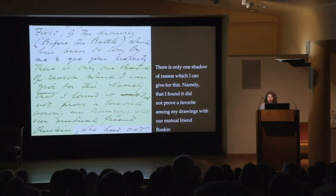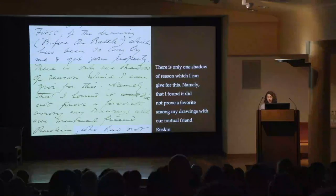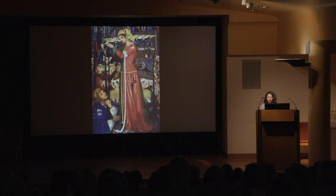In 1860, Norton deputized both Stillman and Ruskin to retrieve his watercolor. Ruskin felt some personal responsibility for Rossetti's sluggish delivery, as the critic had disparaged the watercolor shortly after the artist had completed it. When in early 1862 Rossetti was finally ready to send the work to Norton, he explained the delay: 'There is only one shadow of reason which I can give for this — that I found it did not prove a favorite among my drawings with our mutual friend Ruskin.'